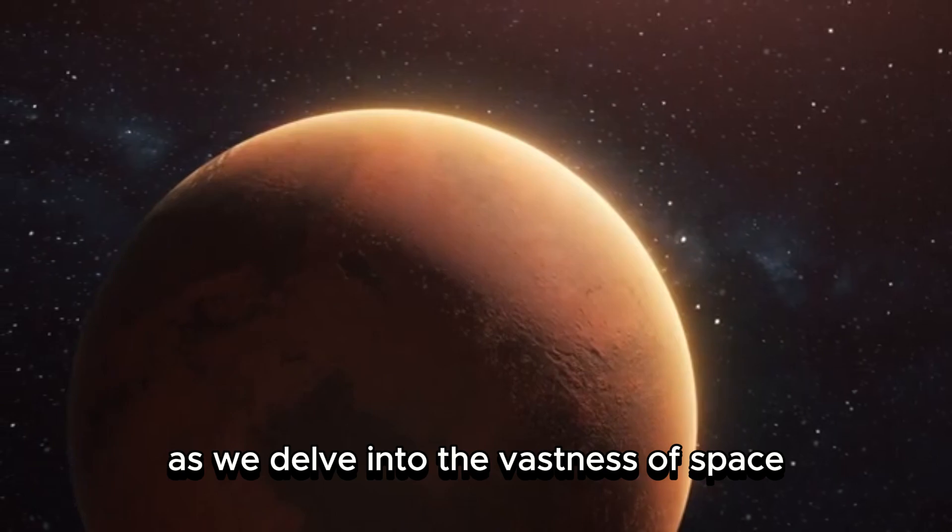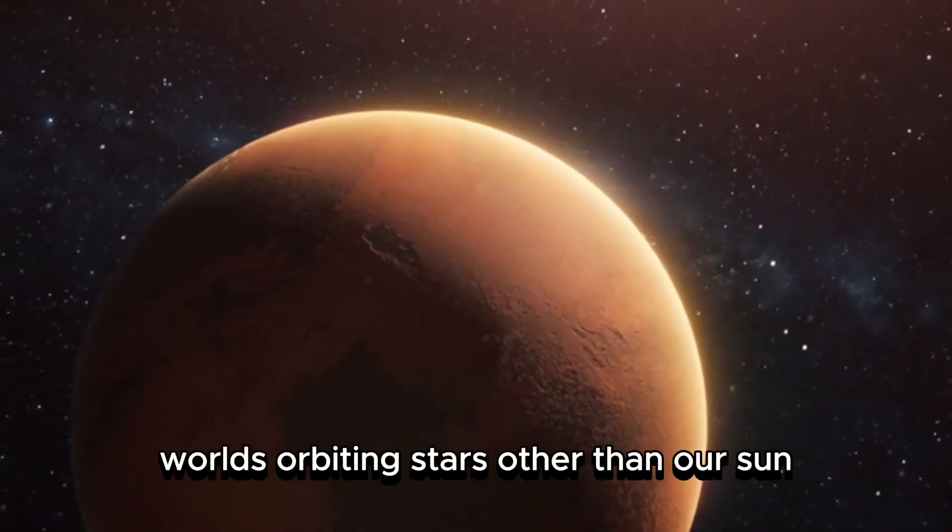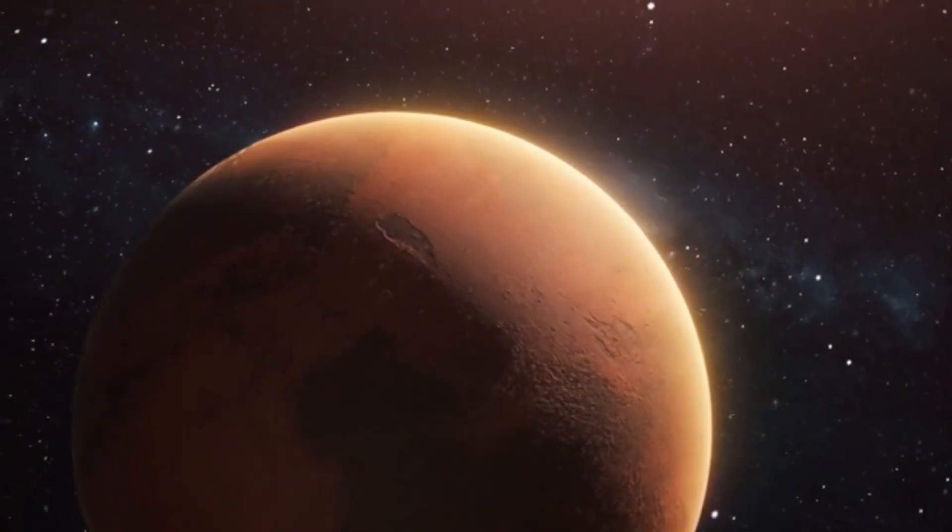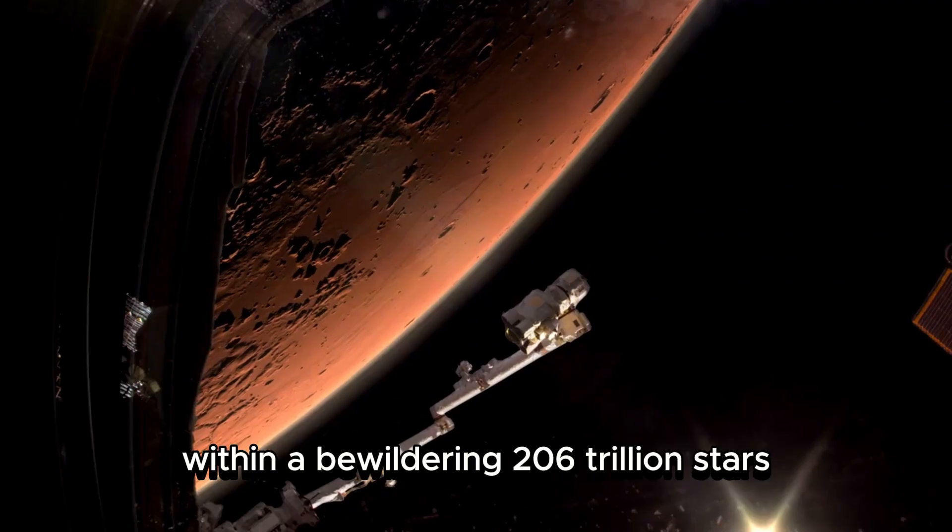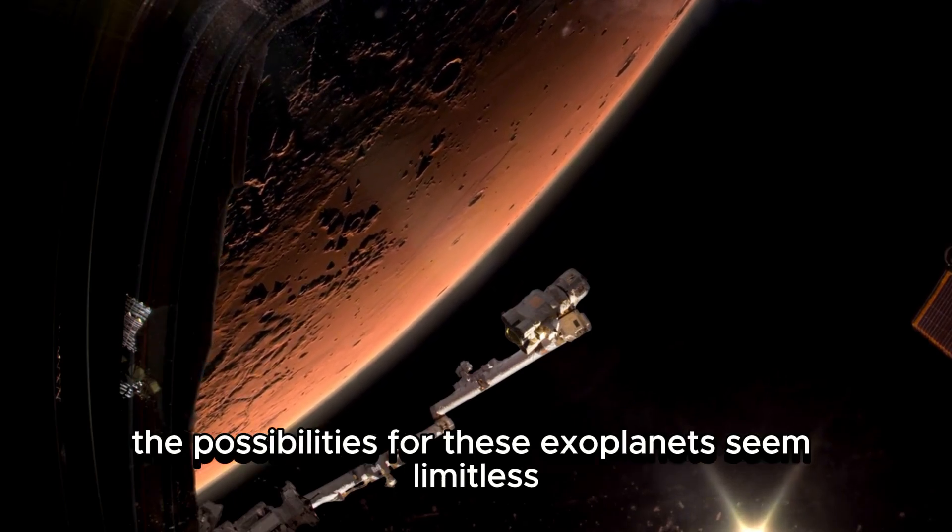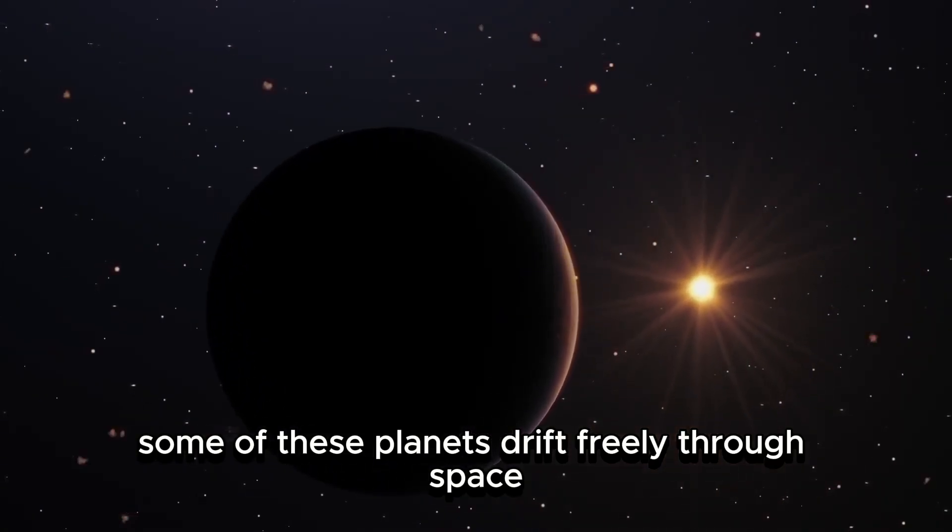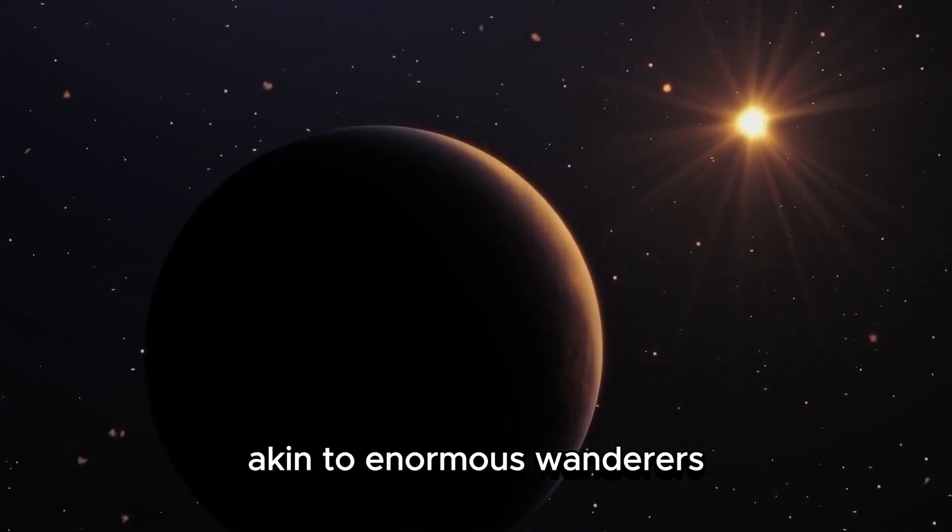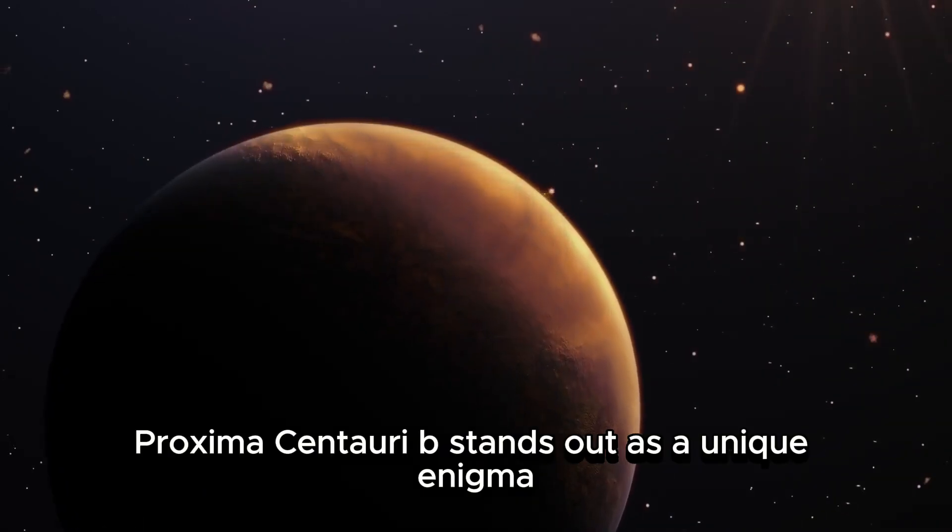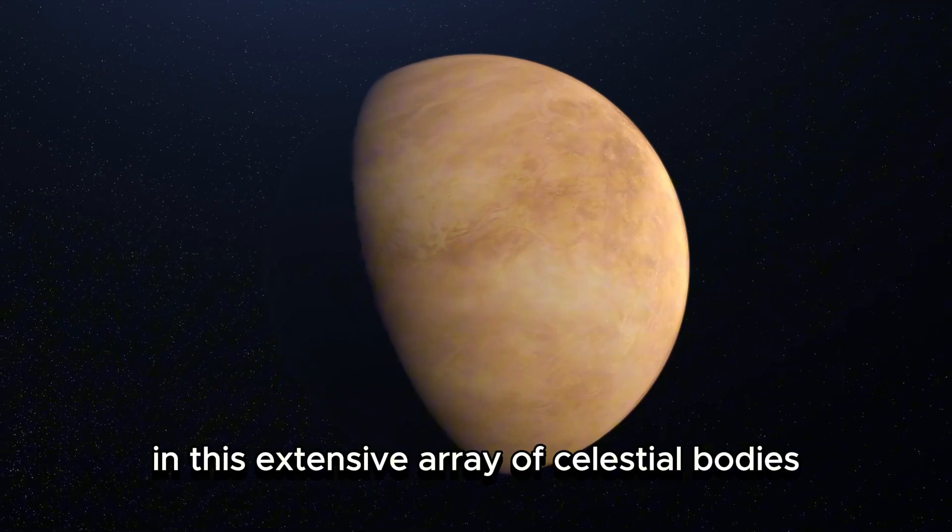As we delve into the vastness of space, we encounter numerous exoplanets, worlds orbiting stars other than our Sun. Within a bewildering 206 trillion stars scattered across the universe, the possibilities for these exoplanets seem limitless. Some of these planets drift freely through space, akin to enormous wanderers. Proxima Centauri b stands out as a unique enigma in this extensive array of celestial bodies.